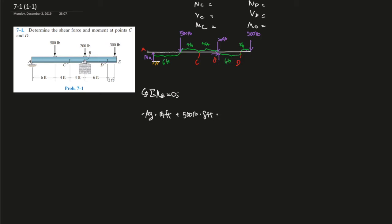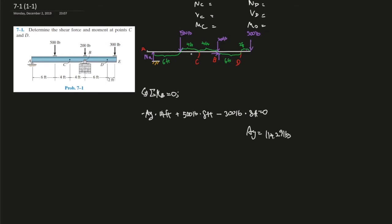Minus 300 pounds times 8 feet as well, equals zero. Plug everything into your calculator. This is 16 divided by 4, this should give you 114.29 pounds.